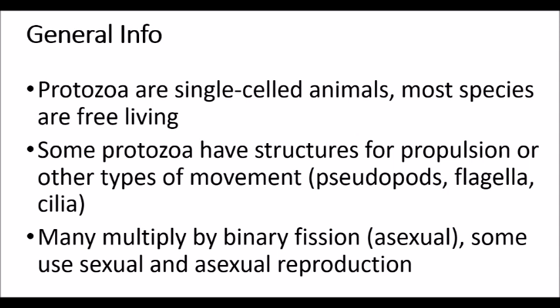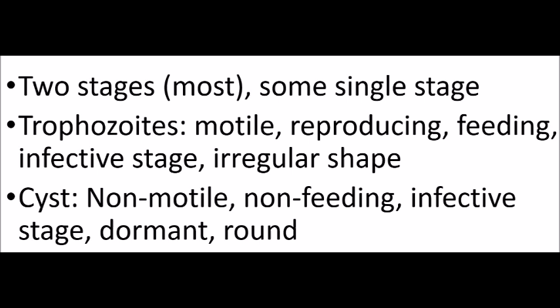Most protozoa have two stages, while some have a single stage. The first is the trophozoite stage, which is the motile, reproducing, feeding, and infective stage, typically irregular in shape. Then there's the cyst stage, which is the non-motile, non-feeding, infective stage. It's dormant and typically round.